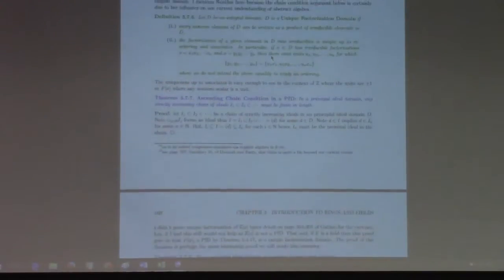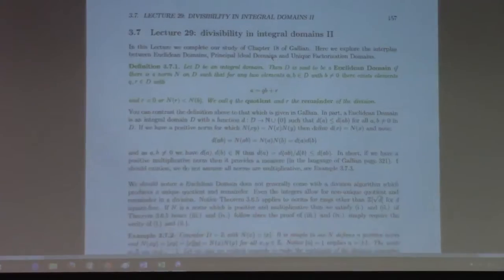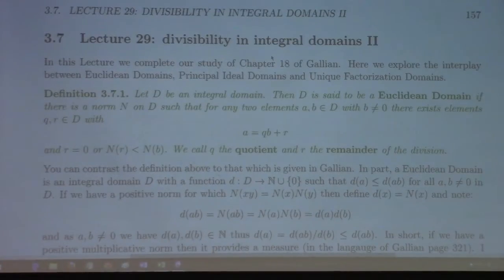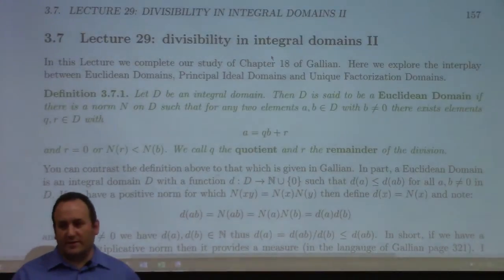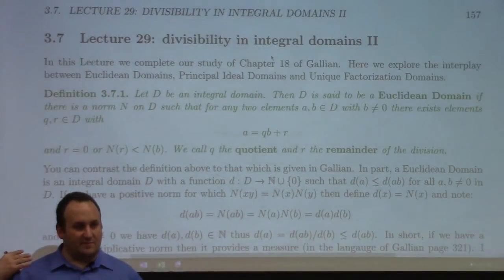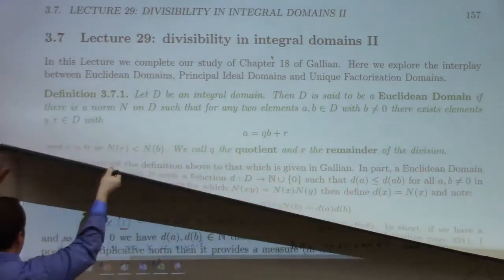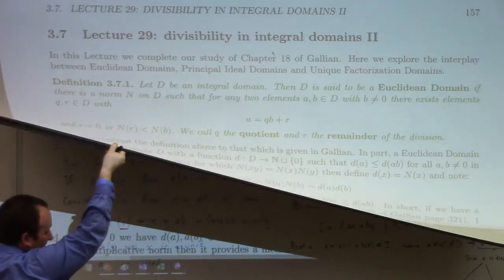I've put in all the definitions and theorems for the remaining chapters we're studying, though I haven't added examples or proofs yet — there's a skeleton of the remaining two lectures. The remainder of chapter 18 discusses three interesting kinds of domains: principal ideal domains (already covered), Euclidean domains, and unique factorization domains. In a PID, every prime is irreducible and every irreducible is prime.